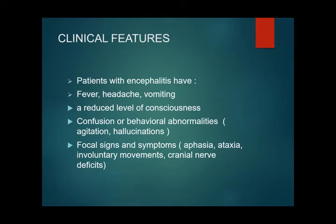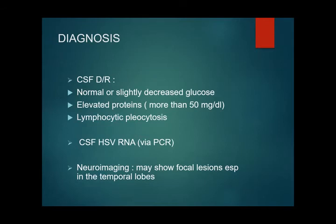Diagnosis is based on CSF analysis. CSF glucose is mostly normal, though some viruses like herpes and mumps may show decreased CSF glucose. Elevated proteins more than 50 mg% and lymphocytic pleocytosis — usually 100 to 500 cells — would be present. Viral RNA can be checked in CSF via PCR, for example HSV RNA when suspecting herpes encephalitis.